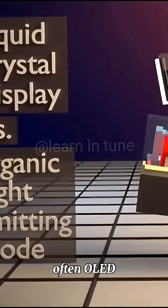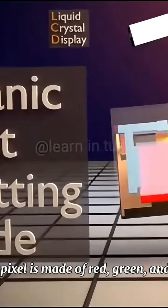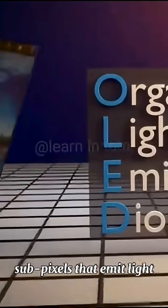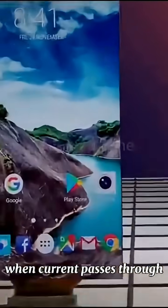Often OLED. Each pixel is made of red, green, and blue subpixels that emit light when current passes through organic compounds. Millions of these pixels combine to produce sharp, colorful images.